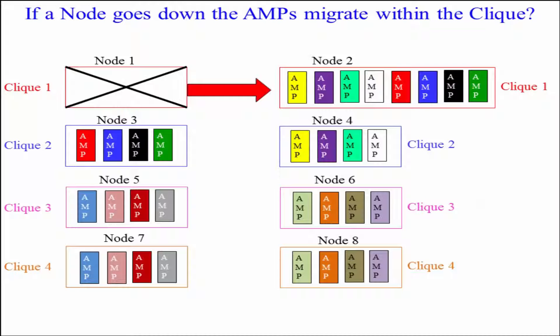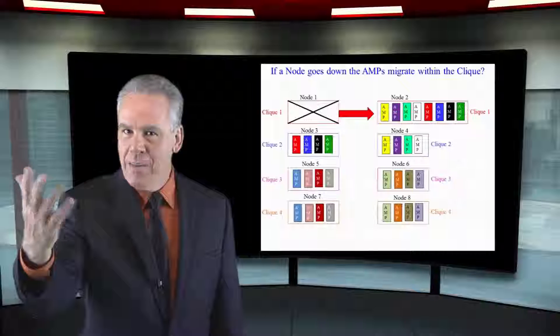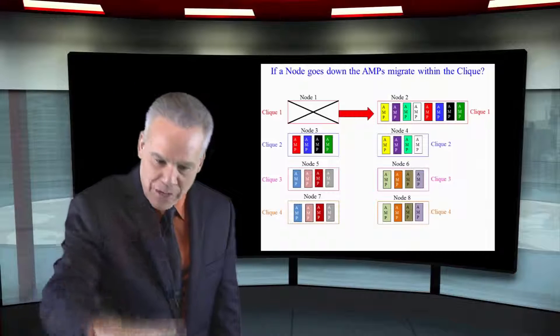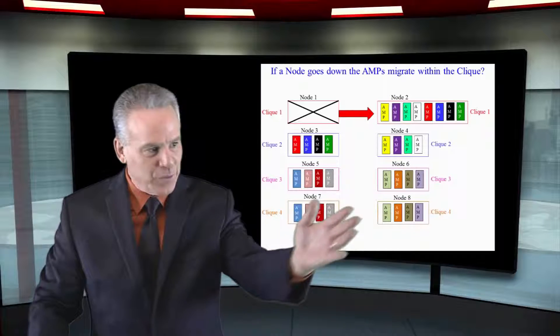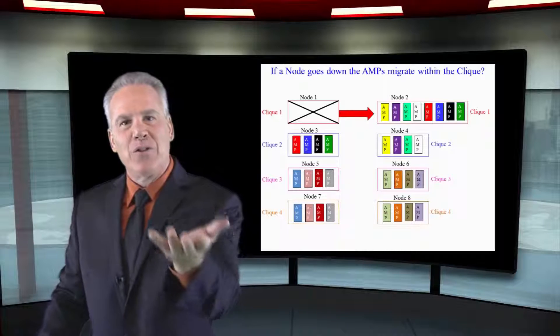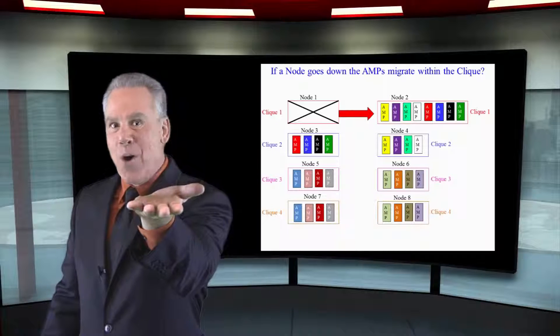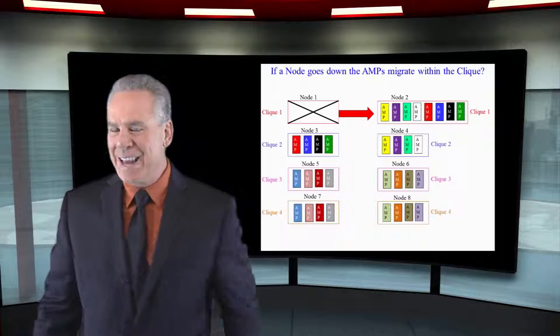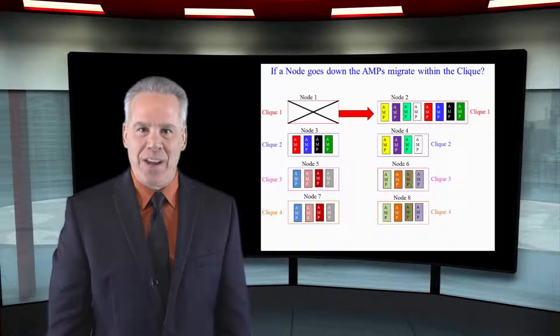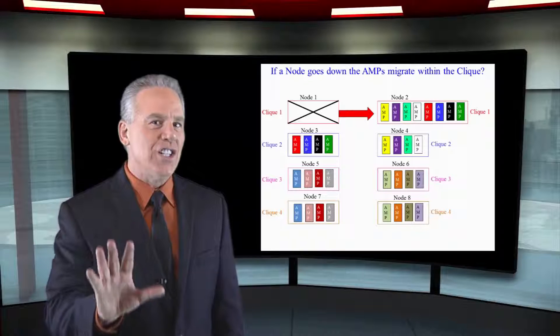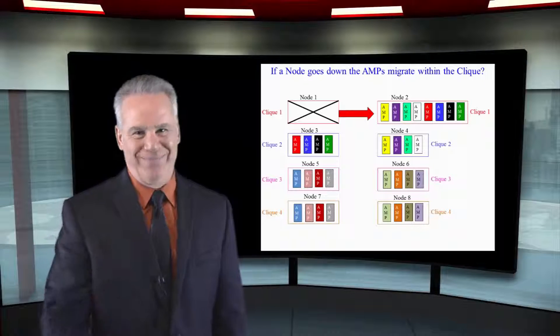Now this node has got to do more work. This is not ideal — it isn't what you want for all production systems — but temporarily the system's going to stay up. It'll go down for a second and reset, things will migrate over to their new buddy node in the same clique, and you're ready to run at a just a little degraded version.